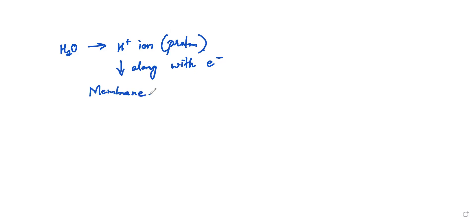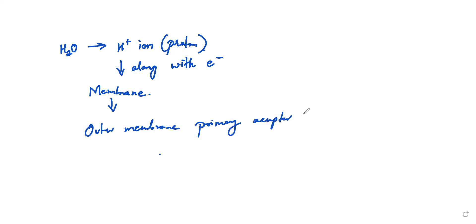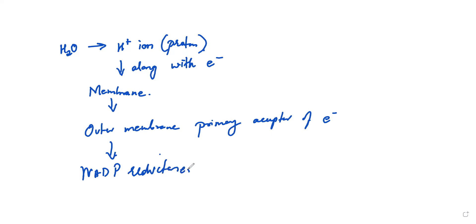The outer side of the membrane is going to act as a primary acceptor of electrons. When the protons and electrons are carried or transported across the membrane, there will be an enzyme called NADP reductase.